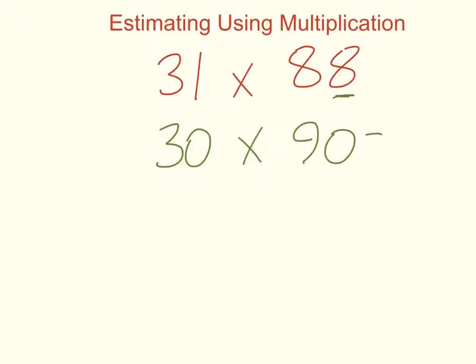So I have 30 times 90. I cross out my zeros. 3 times 9 is 27, and then I tack two zeros on. So 30 times 90 is about 2,700, and that's how we estimate using multiplication.